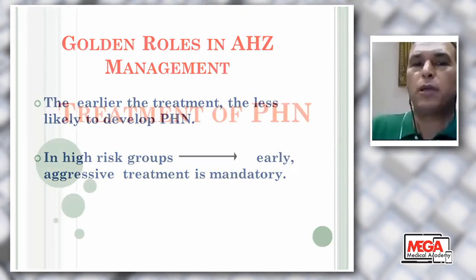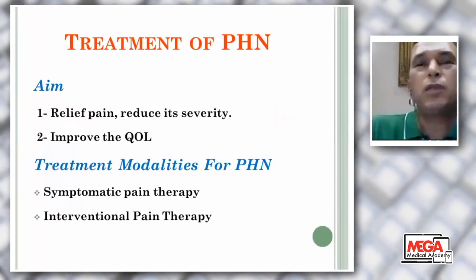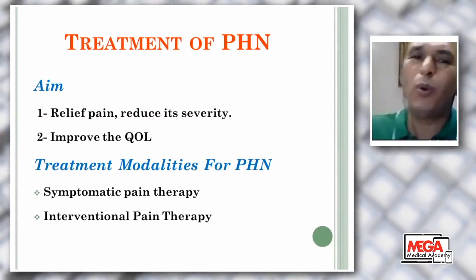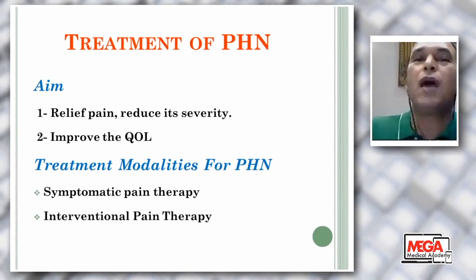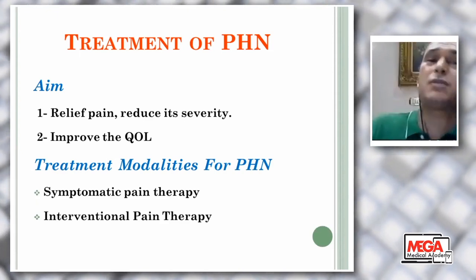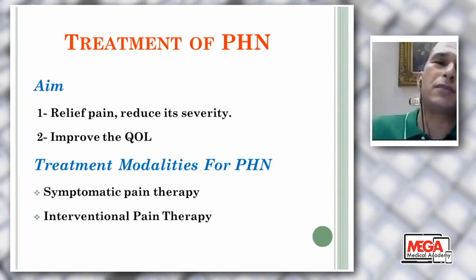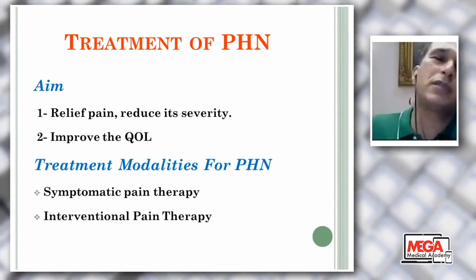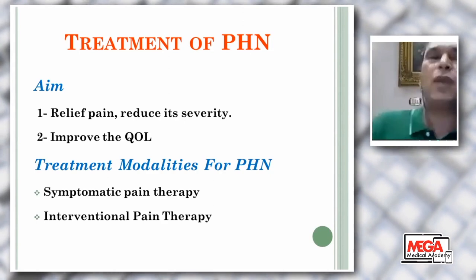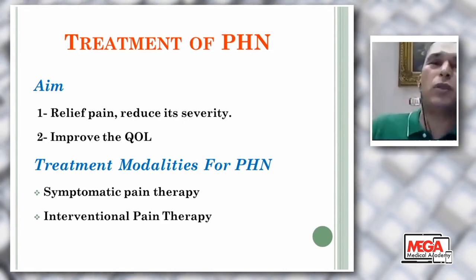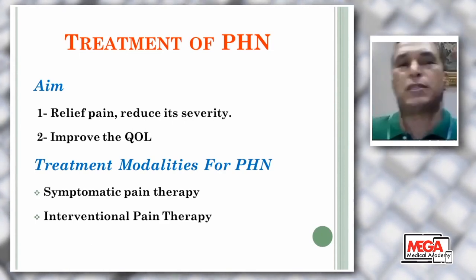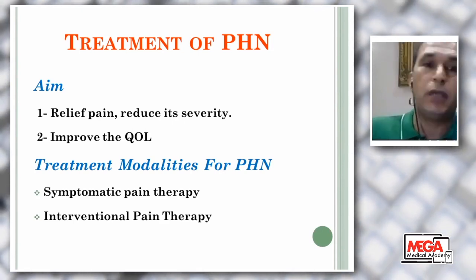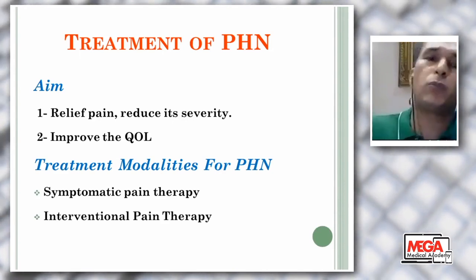Treatment of post-herpetic neuralgia: the treatment aim is to relieve pain, reduce its severity, and improve quality of life — it is almost palliative. There is no cure from post-herpetic neuralgia. In some mild cases there is spontaneous resolution, but this is not the rule, especially in our community in Egypt and third-world countries where there is no vaccination. Without vaccination, the wild virus produces severe acute herpes zoster followed by severe post-herpetic neuralgia. Treatment modalities include symptomatic drug therapy and interventional therapy.